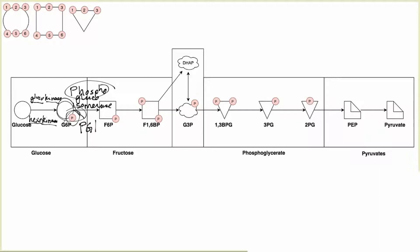Moving forward, we want to add a phosphate group to the one position of fructose-6-phosphate. To do that we use phosphofructokinase-1: 'phosphofructo' meaning phosphorylated fructose, and 'kinase' meaning we are adding a phosphate group specifically to the one position. From this we get fructose-1,6-bisphosphate.